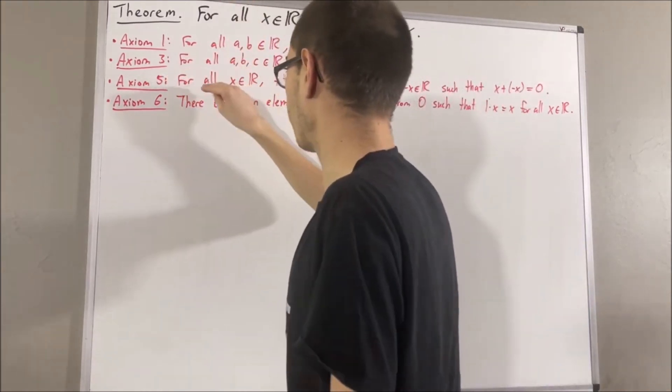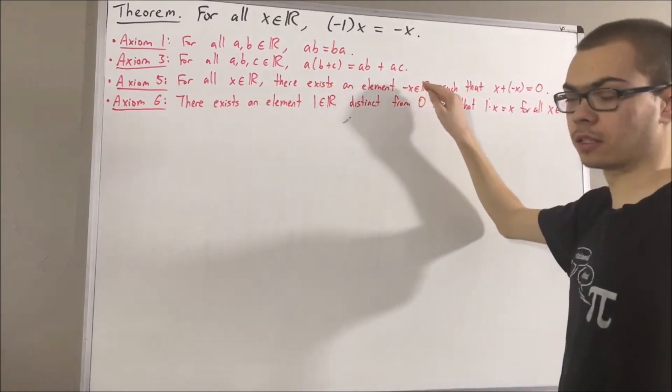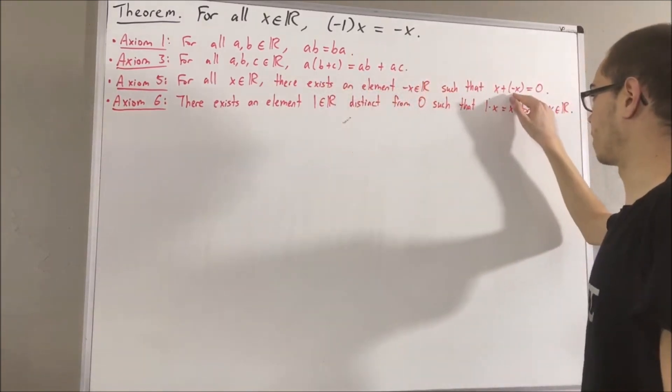axiom 5 tells us for every real number x, there exists a real number we call the negative x, with the property that x plus the negative x is equal to 0.